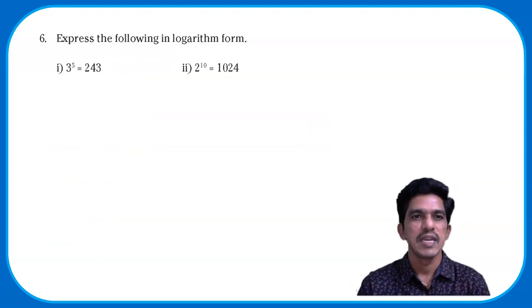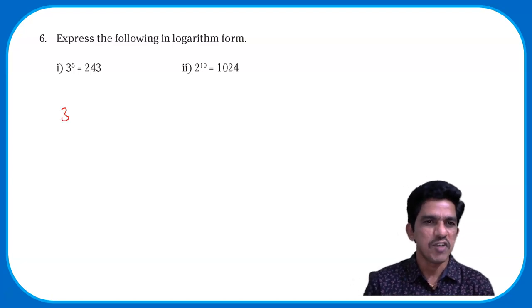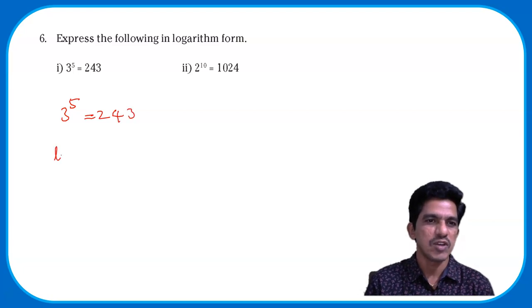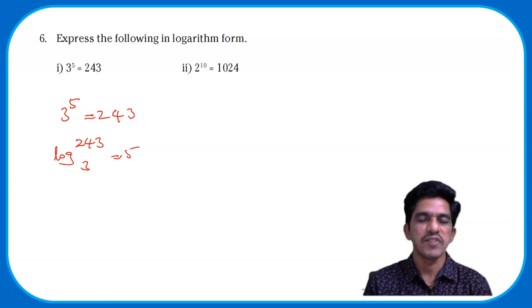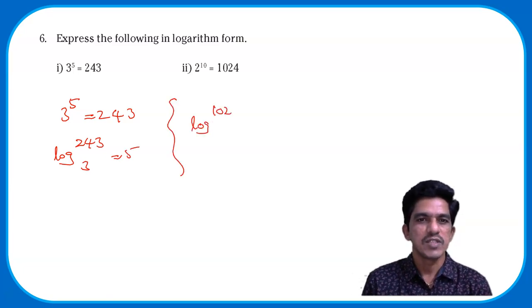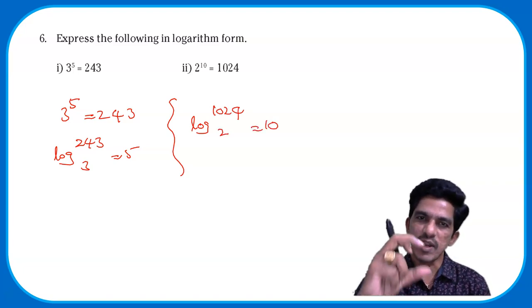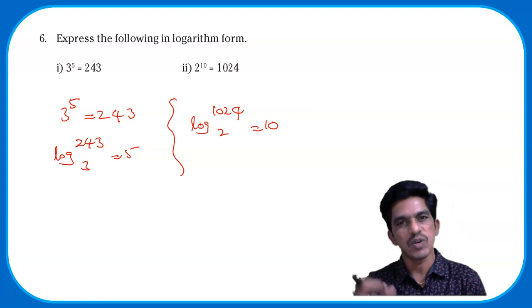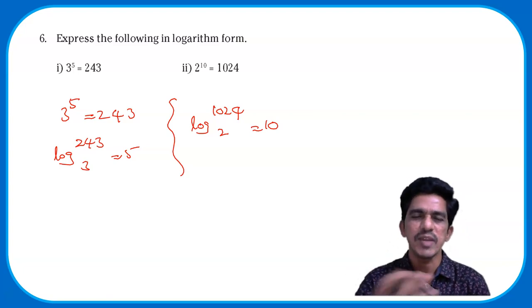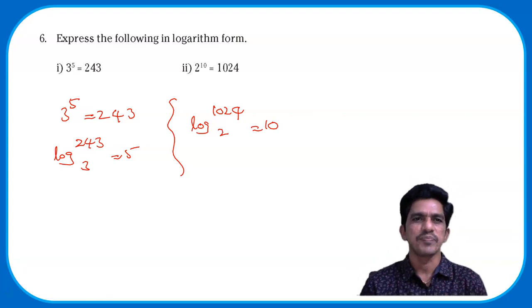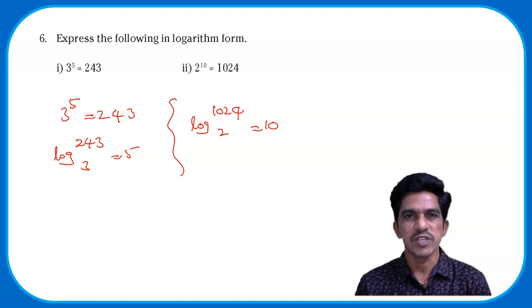Question 6: express the following in logarithmic form. Very simple question. Exponential form is converted to logarithmic form. So 3⁵ = 243 becomes log₃243 = 5, and 2¹⁰ = 1024 becomes log₂1024 = 10.